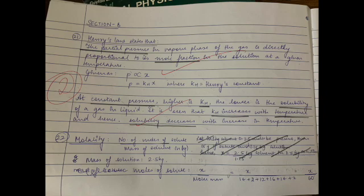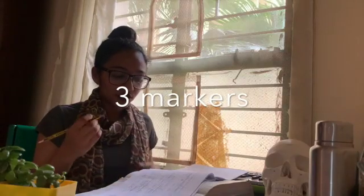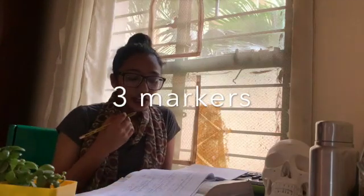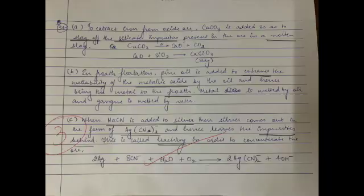You can see the basic length of a two-marker question. Now look at the length of a three-marker — in most three and five marker questions they usually divide it into several parts. This three-marker had three parts, so each part carries one mark. It's similar to one-markers: just be precise and to the point.